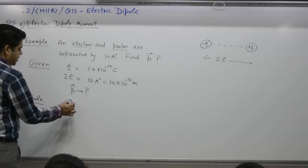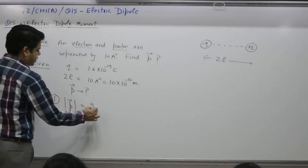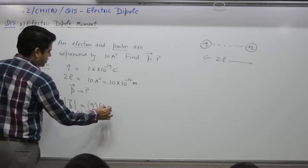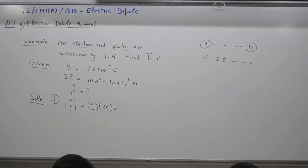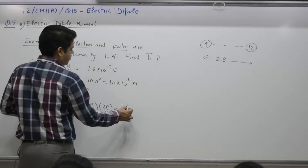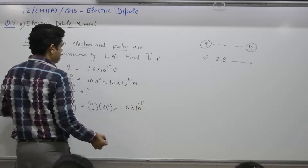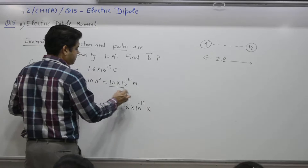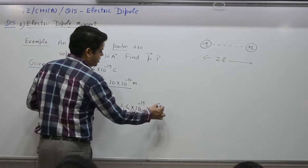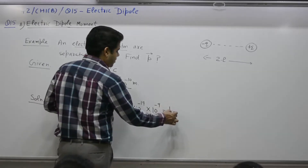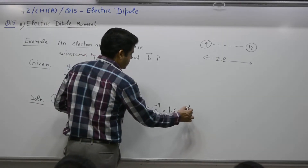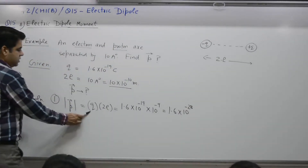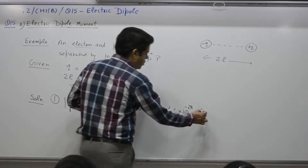Step 1: Magnitude of p equals charge times distance. Charge is 1.6 × 10⁻¹⁹ coulombs, distance 2l is 10 angstroms = 10 × 10⁻¹⁰ = 10⁻⁹ meters. So magnitude of p = 1.6 × 10⁻¹⁹ × 10⁻⁹ = 1.6 × 10⁻²⁸ coulomb-meter.